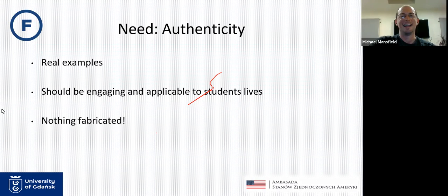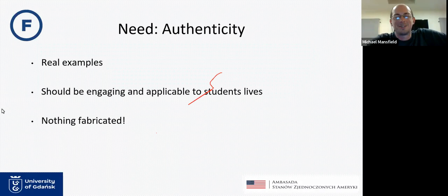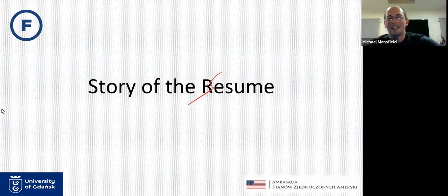What we also need is authenticity. The examples I want my students to see should not be fabricated, not from a textbook — they should be the real deal, and hopefully engaging: something on cyberbullying, or ChatGPT, which is in the news a lot. Now I want to get into the story of the resume — the last genre of writing I can really recall learning. I learned to write most formal texts in college, but they never really taught me how to write a resume.